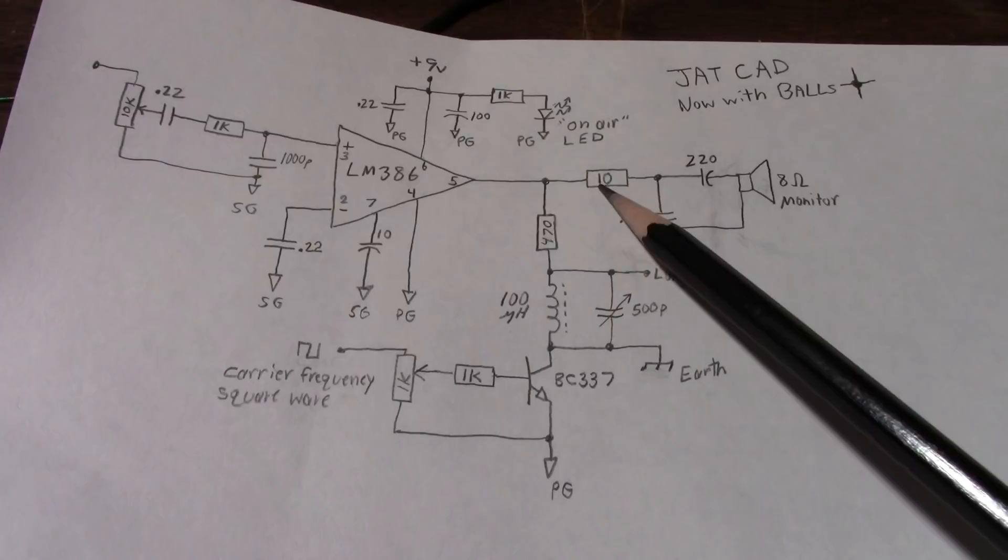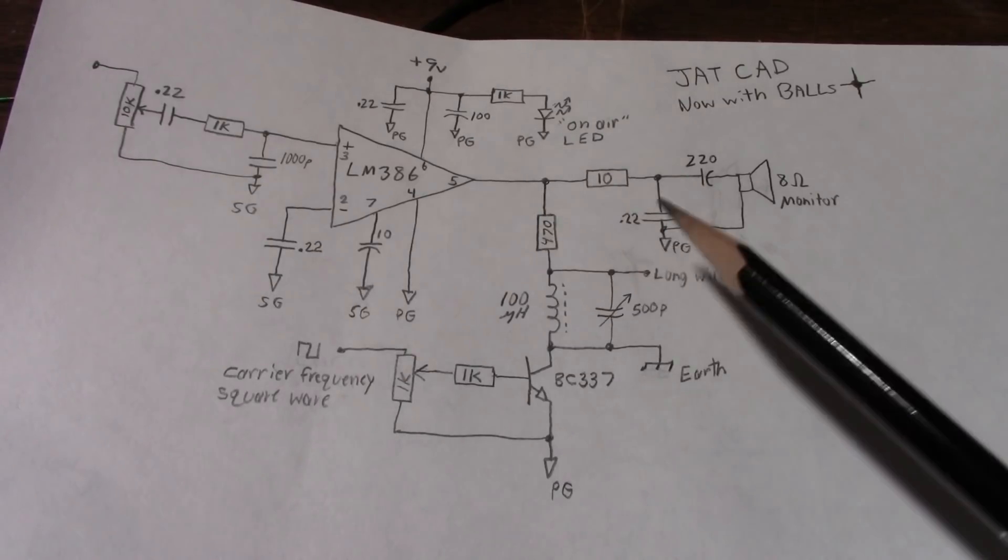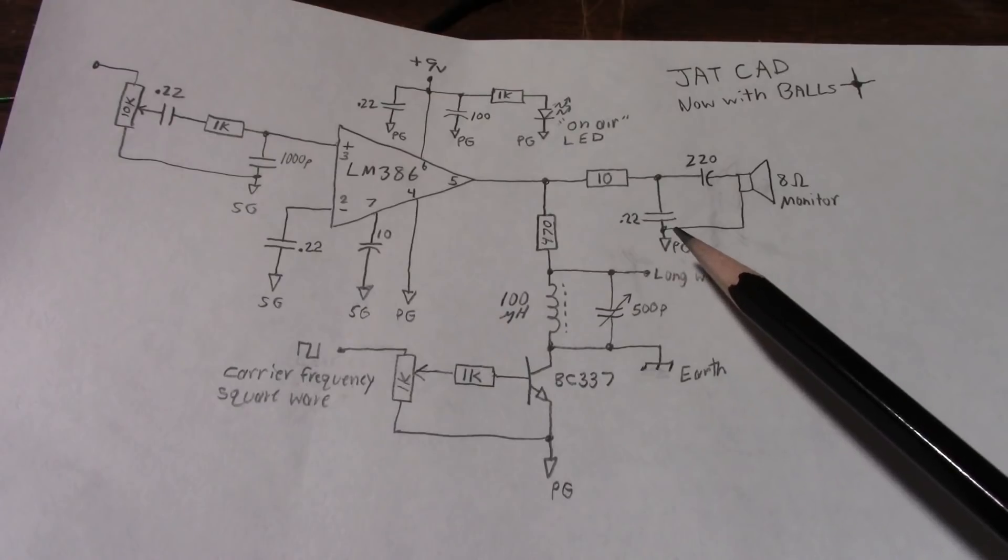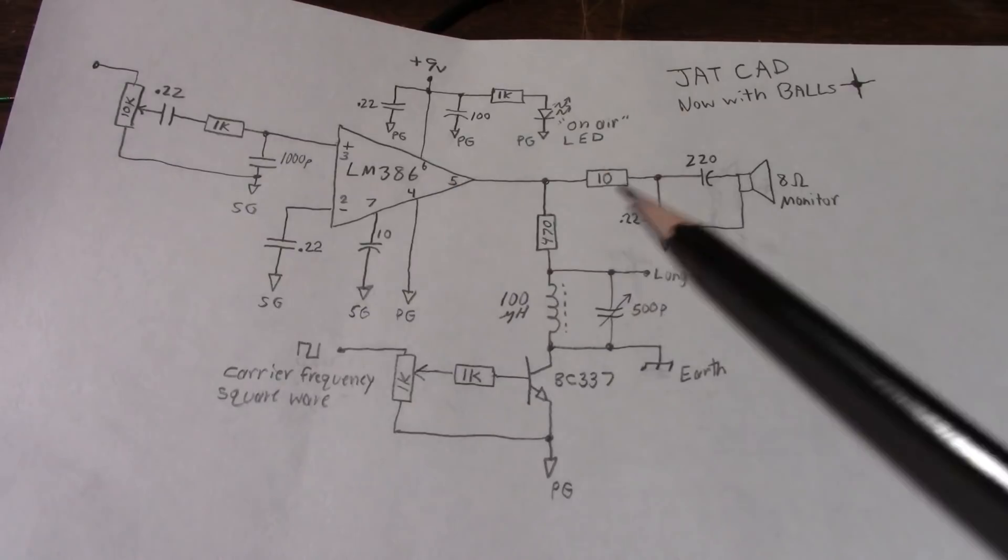But you must leave the 10 ohm resistor and this capacitor. It's part of the Boucherot cell or snubber network as some people call it. And it too helps a little bit keeping RF from the amp and stability of the amplifier.